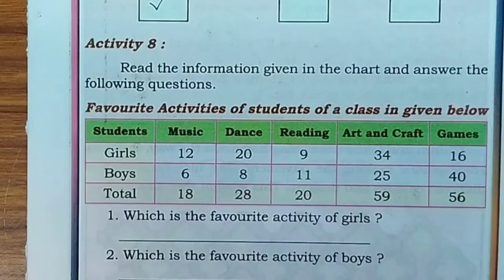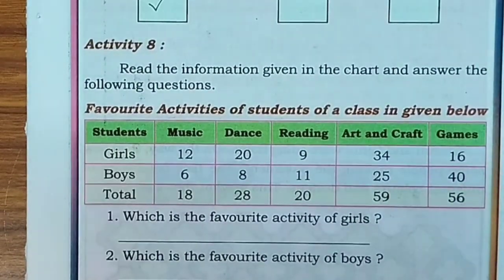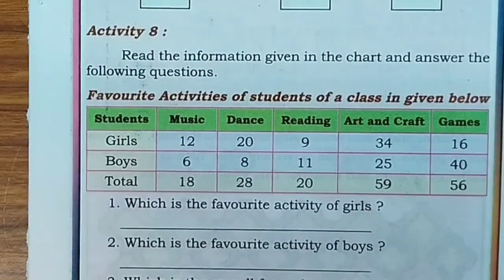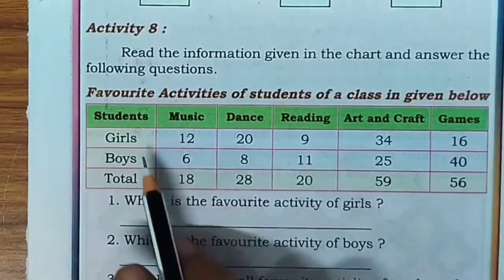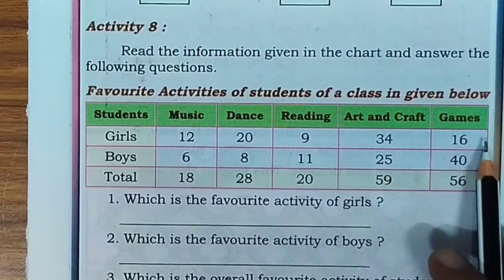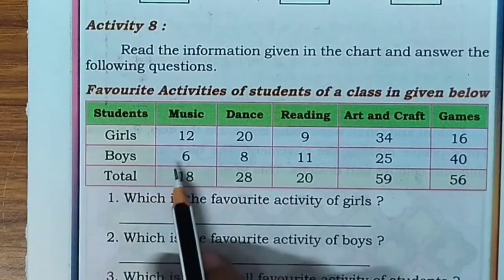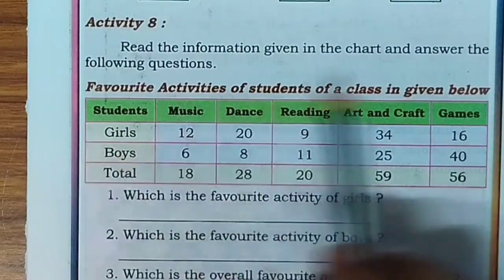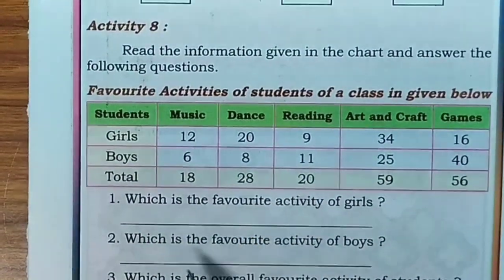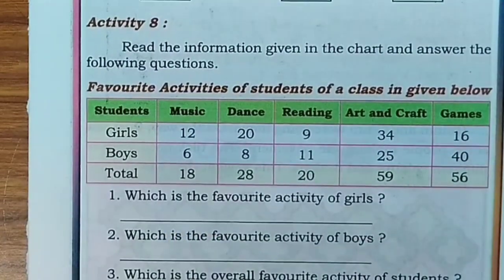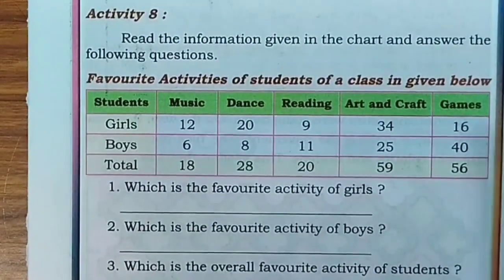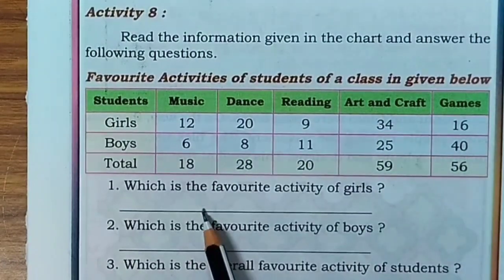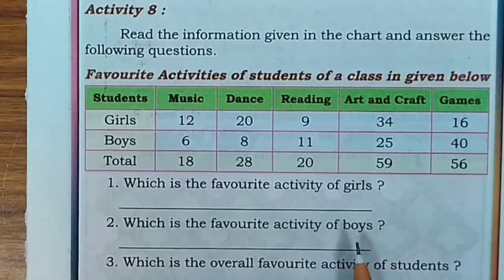Activity 8. Read the information given in the chart and answer the following questions. The favorite activities of students of a class are given below — students are categorized by girls, boys, and total. Activities include music, dance, reading, art and craft, and games. Which is the favorite activity of girls? Here 34 girls are interested in art and craft, so the favorite activity of girls is art and craft.